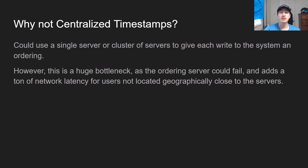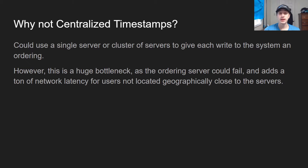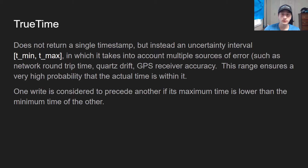Another option would be a centralized timestamp server — every single write hits that server first. But anytime you say 'centralized,' two things should come up: first, it's a single point of failure, assuming you're not using redundancy or a consensus algorithm. Second, it's going to be a huge bottleneck. Imagine if you're in Australia and you want to write to a Spanner instance in Australia, but the ordering server is in America — that's going to hugely slow down your write.